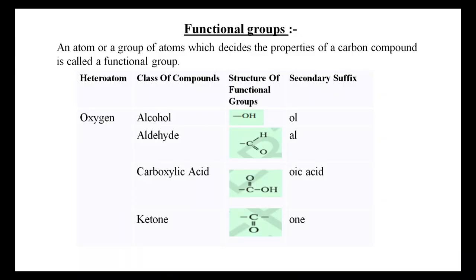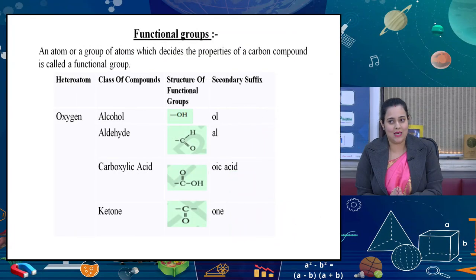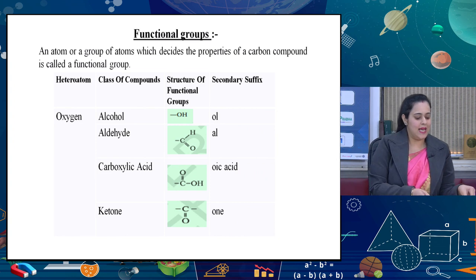Now we will start discussing the present session with more functional groups. The second functional group in our course is aldehyde, represented with C double bond O-H, and the secondary suffix used is AL. Similarly, carboxylic acid is C double bond O-OH, secondary suffix is oic acid. Ketone is C double bond O, and the secondary suffix is ONE. We will take up each one by one.